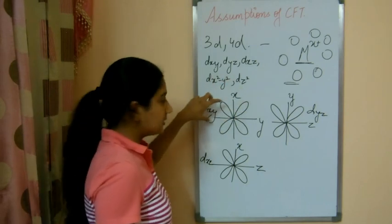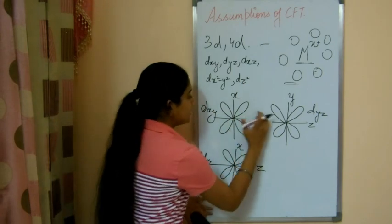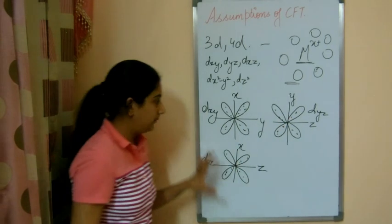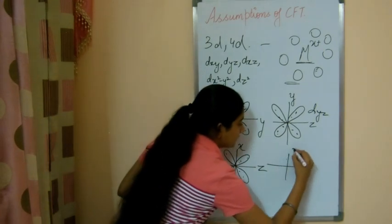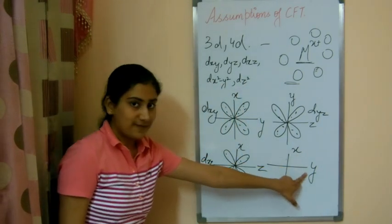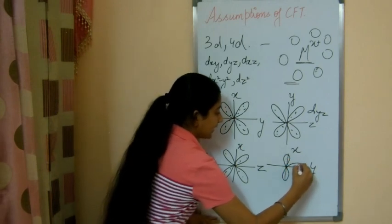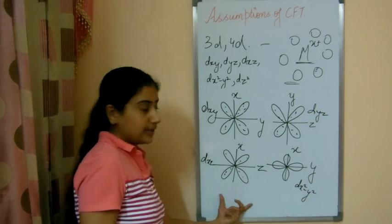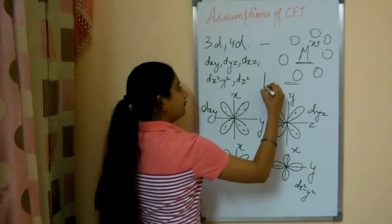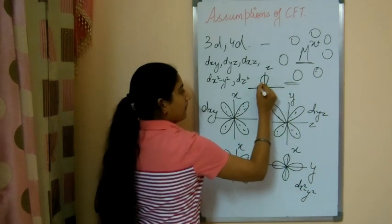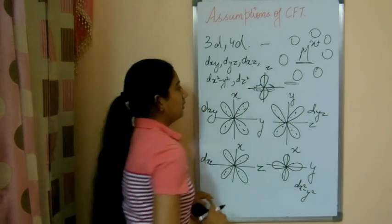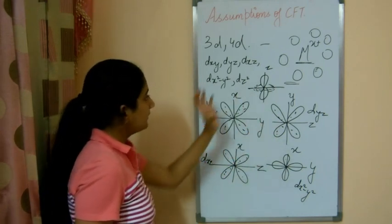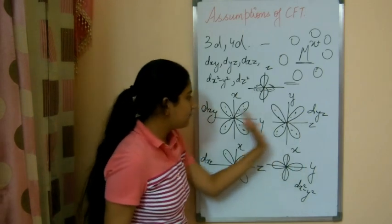We can see that these lobes indicate where electrons will be present — in between the axes, not along them. Dx²−y² has a different orientation: with x and y axes, the lobes are directed along the axes. And Dz² has a different shape — if this is the z axis, it has a large lobe along the z axis and a smaller lobe in the xy plane. So these are the different shapes and orientations of the five D orbitals.